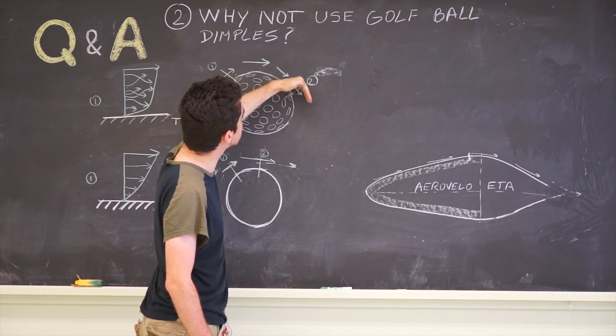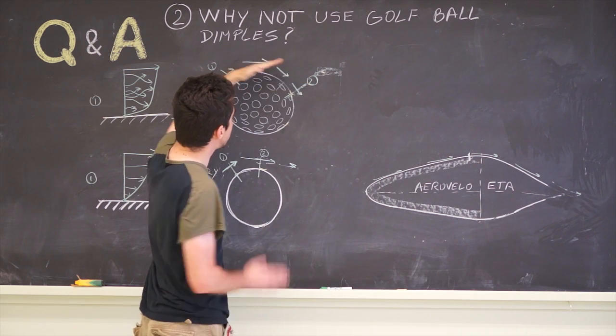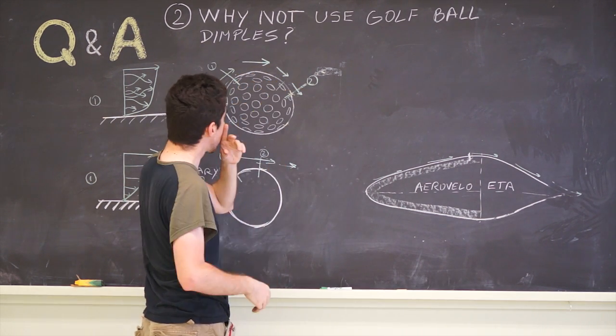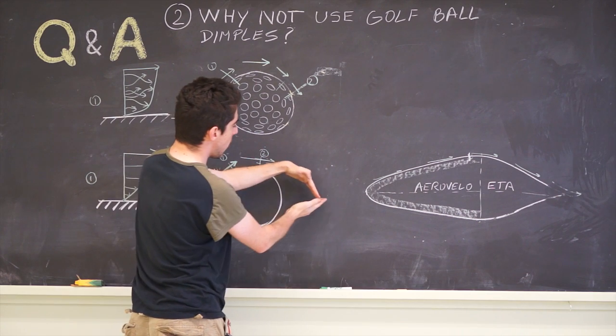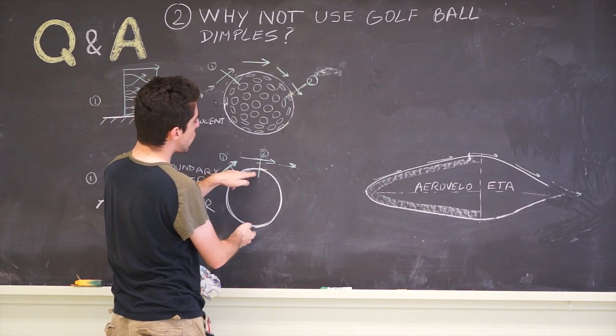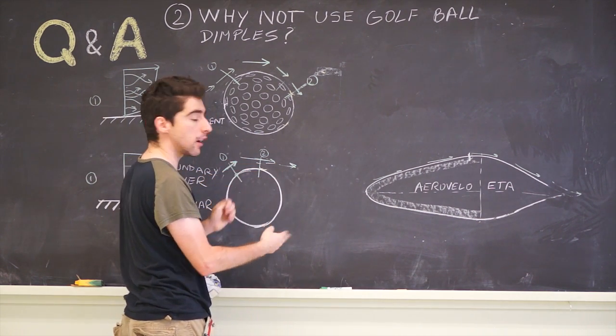But it turns out the turbulent boundary layer has a very good property if we look what happens as the air tries to come around the object. When the air comes around the object, from the widest point further, it starts slowing down.